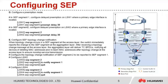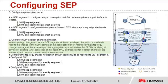Step D, configure a preemption mode. Configure delayed preemption in SEP segment 1 on LSW1 where the primary edge interface is located. Configure delayed preemption in SEP segment 2 on LSW2 where the primary edge interface is located. Step E, configure SEP topology change notification. When a topology change occurs in an SEP segment at the access layer, the switch immediately reports the change to the SEP segment at the aggregation layer. After receiving a topology change message, the aggregation layer will deliver TCBPDUs notifying all devices to delete and relearn MAC addresses, ensuring non-stop service transmission. Configure LSW2 and LSW4 to report the topology change of SEP segment 2 to SEP segment 1.